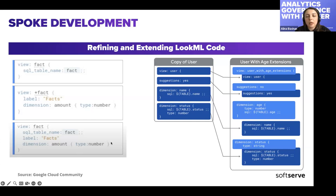For extending — when you extend LookML code, it means you are creating a copy of that object and then you can change what you need, but it will be a separate object in the Looker model for your own purposes, depending on what you need.